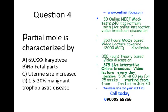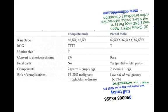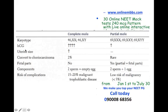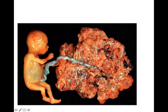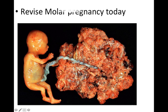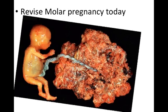The next question is partial mole — how do you differentiate it from the complete mole? A 69 triple X karyotype is the differentiator. HCG will be more elevated in the complete mole. Uterine size is increased in complete mole. Malignant transformation of molar pregnancy is more common in complete mole. Revise molar pregnancy today — it is one of the 500 high-yield topics in the NEET-PG tomorrow.